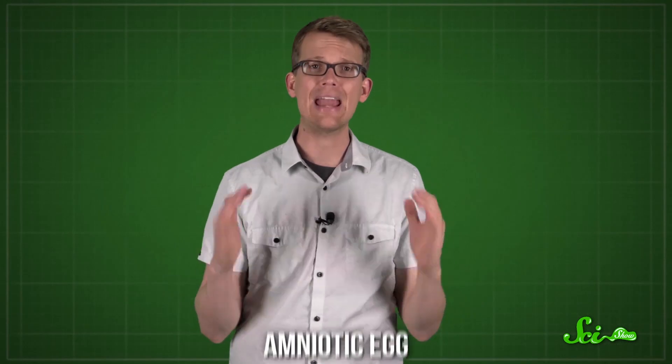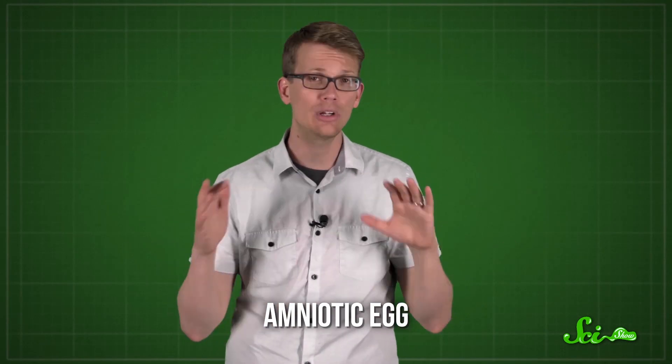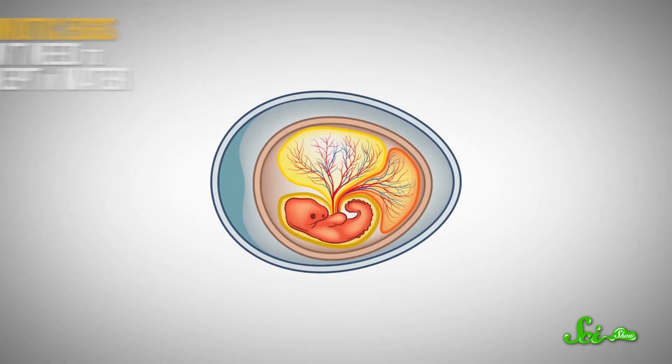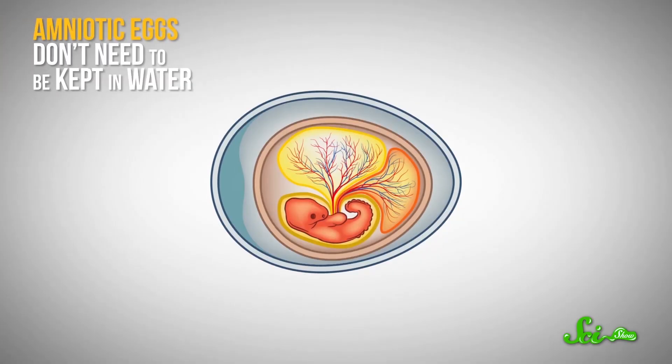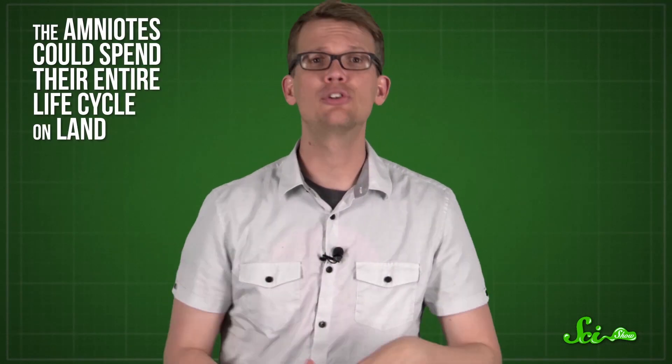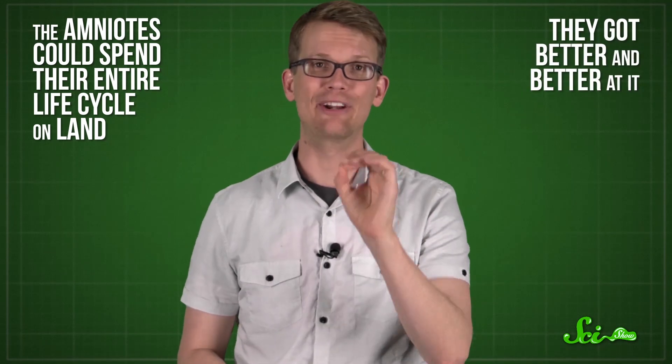Land vertebrates were still fairly small in the Carboniferous, but they did develop one major evolutionary innovation, the amniotic egg, which is the reason you can store a chicken egg without it drying out. Amniotic eggs don't need to be kept in water, because they have a tough shell and membranes to manage gas exchange without letting the embryo dry out. The reptiles that laid these eggs were less dependent on water than the first tetrapods, who still had to return to the water to lay their eggs. But the amniotes could spend their entire life cycle on land, and they got better and better at it. And they got bigger.